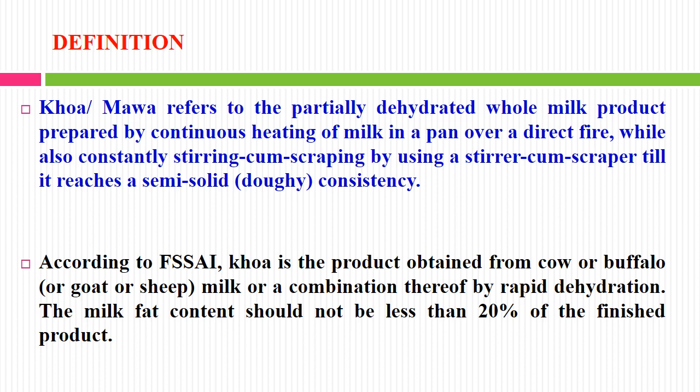As per FSSAI, Khoa is the product obtained from cow or buffalo or sheep and goat milk or a combination thereof by rapid dehydration. The milk fat content should not be less than 20% of the finished product. So this is the definition of Khoa.